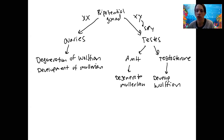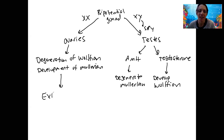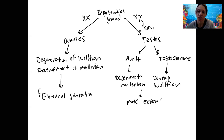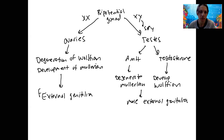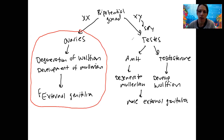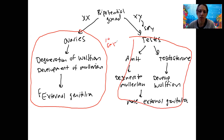The duct systems then further develop, and the body develops external genitalia. In females: clitoris, labia, and so on. In males: scrotum and penis. These are all primary sex characteristics.